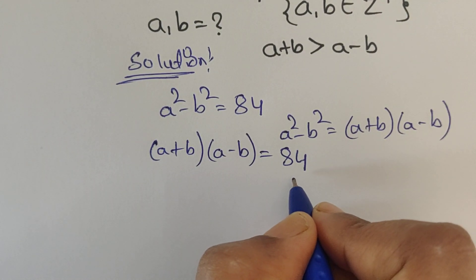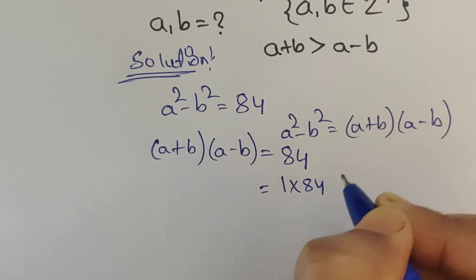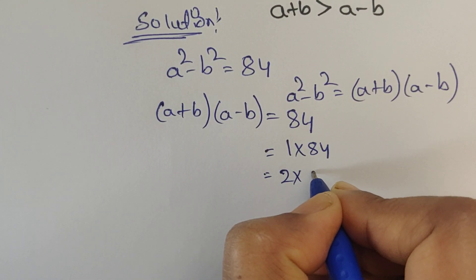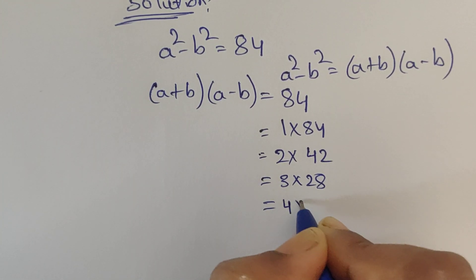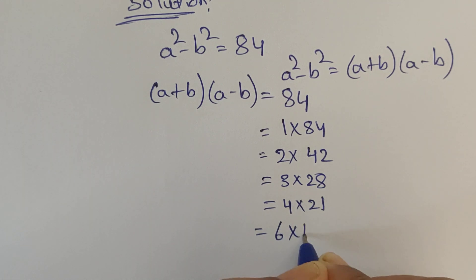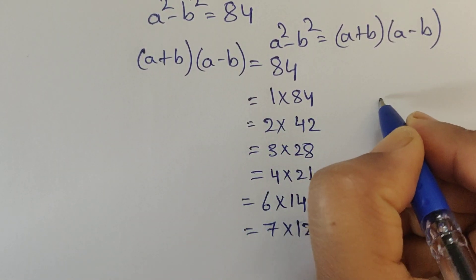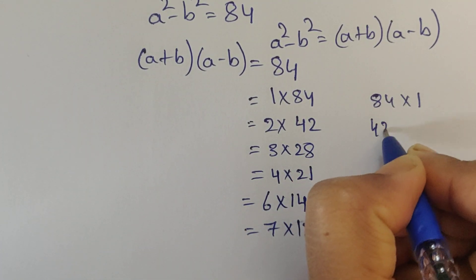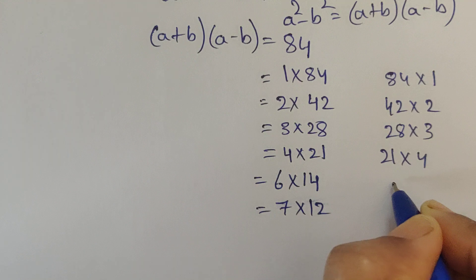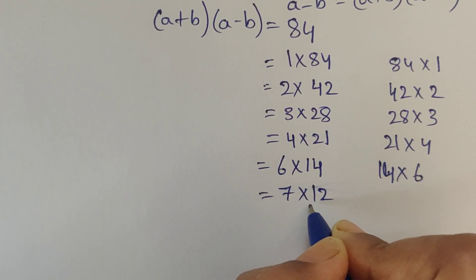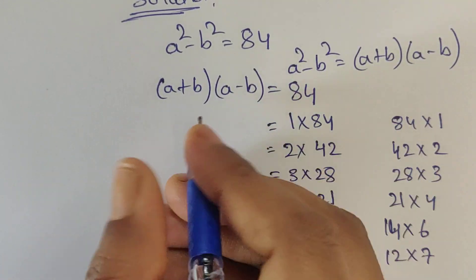Now we need to write the factors of 84. The factor pairs are: 1 times 84, 2 times 42, 3 times 28, 4 times 21, 6 times 14, and 7 times 12. Also in reverse: 84 times 1, 42 times 2, 28 times 3, 21 times 4, 14 times 6, and 12 times 7. Now we have to check which factors satisfy our condition.